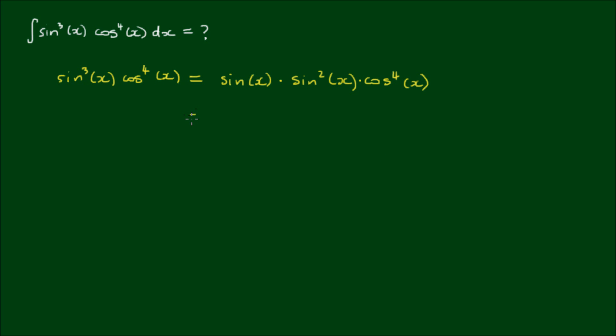And now realizing that sin²(x) can be written as 1-cos²(x), because cos²(x) plus sin²(x) is equal to 1. So if I rearrange this equation, I get 1-cos²(x). I can rewrite this as sin(x)[1-cos²(x)]cos⁴(x).